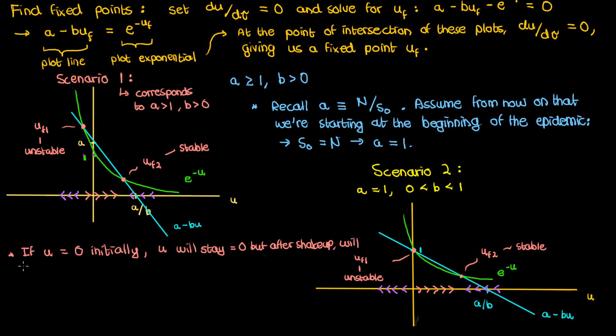However, if I slightly shake things up and introduce an infected person into the population at the very start of the epidemic and if people start dying as a result of that infected person the number of dead people will rise and eventually converge to our stable fixed point uf2 which is a positive number. Now remember the derivative is the line minus the exponential so the larger this gap between the line and the exponential the larger the derivative.